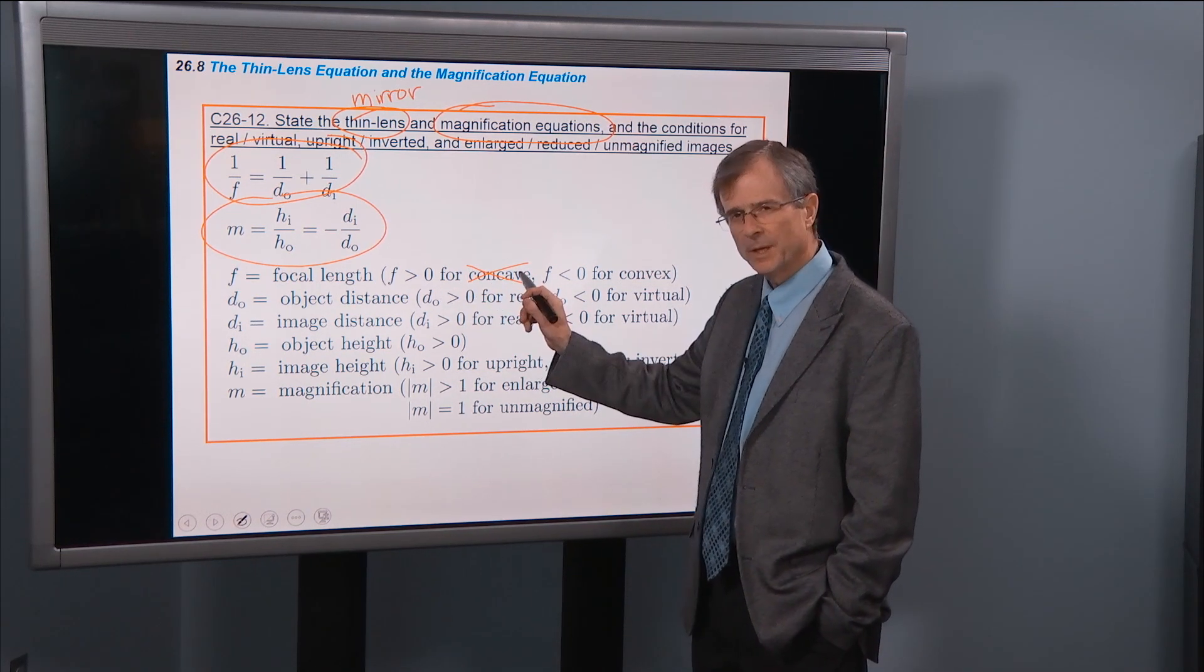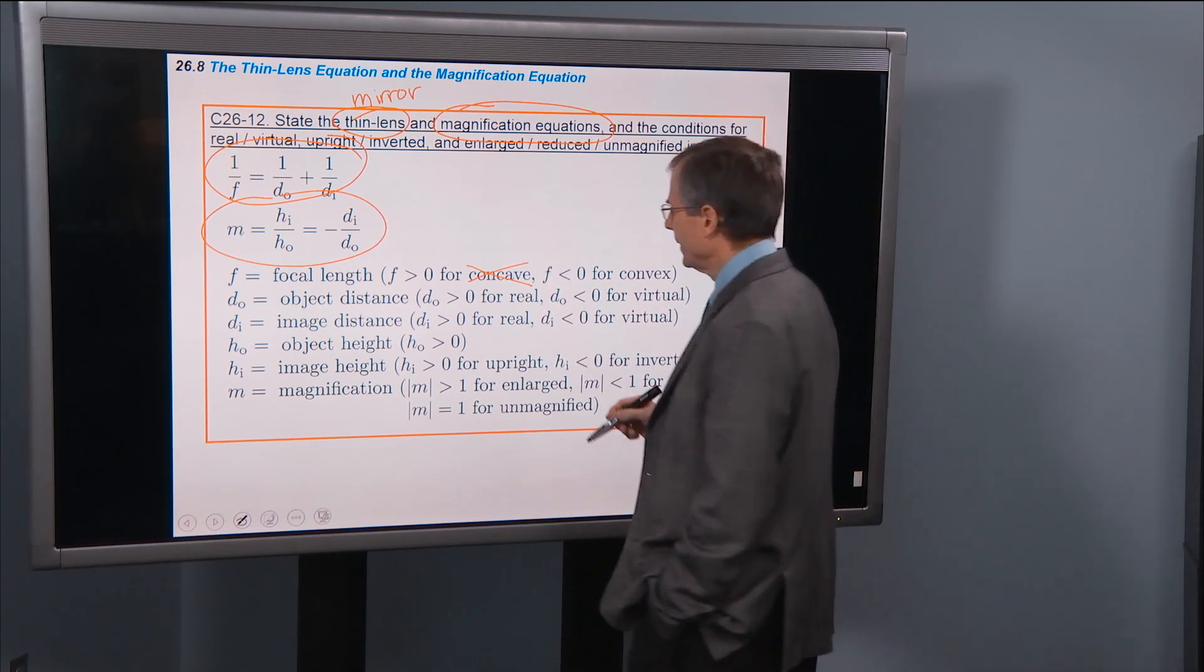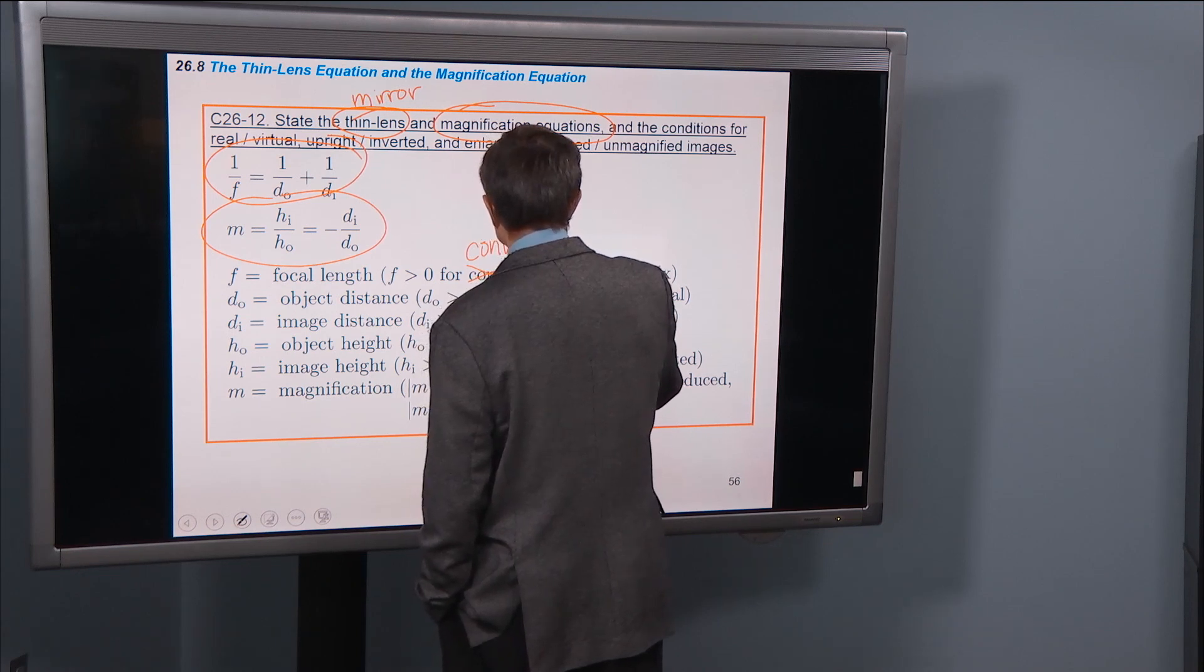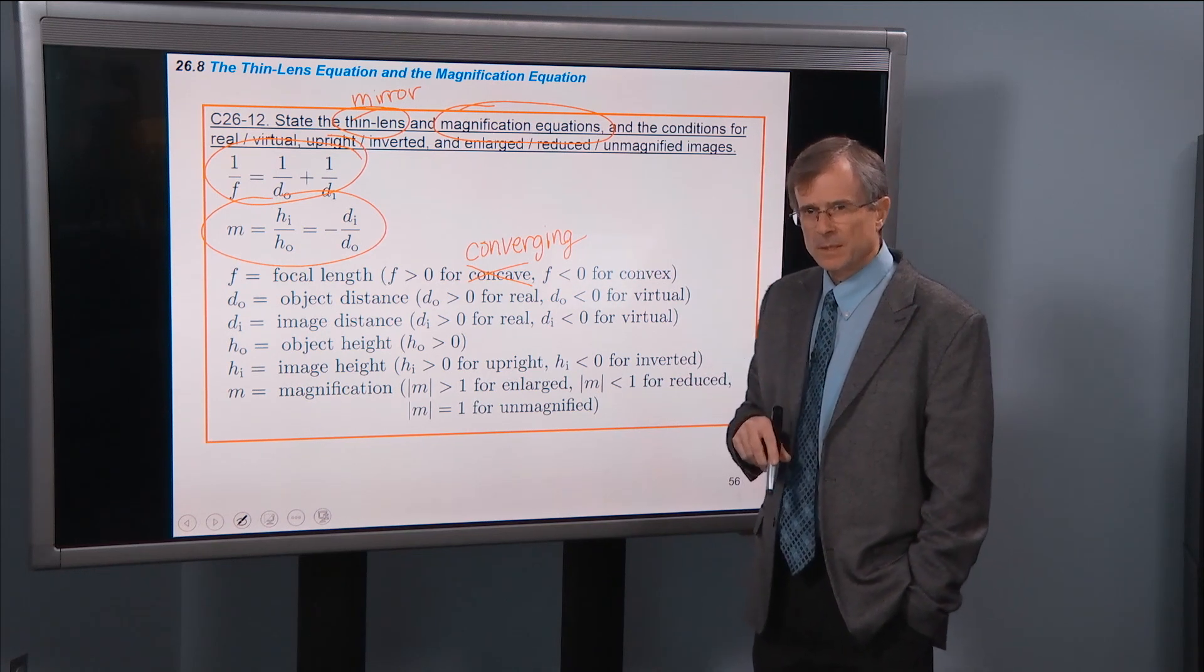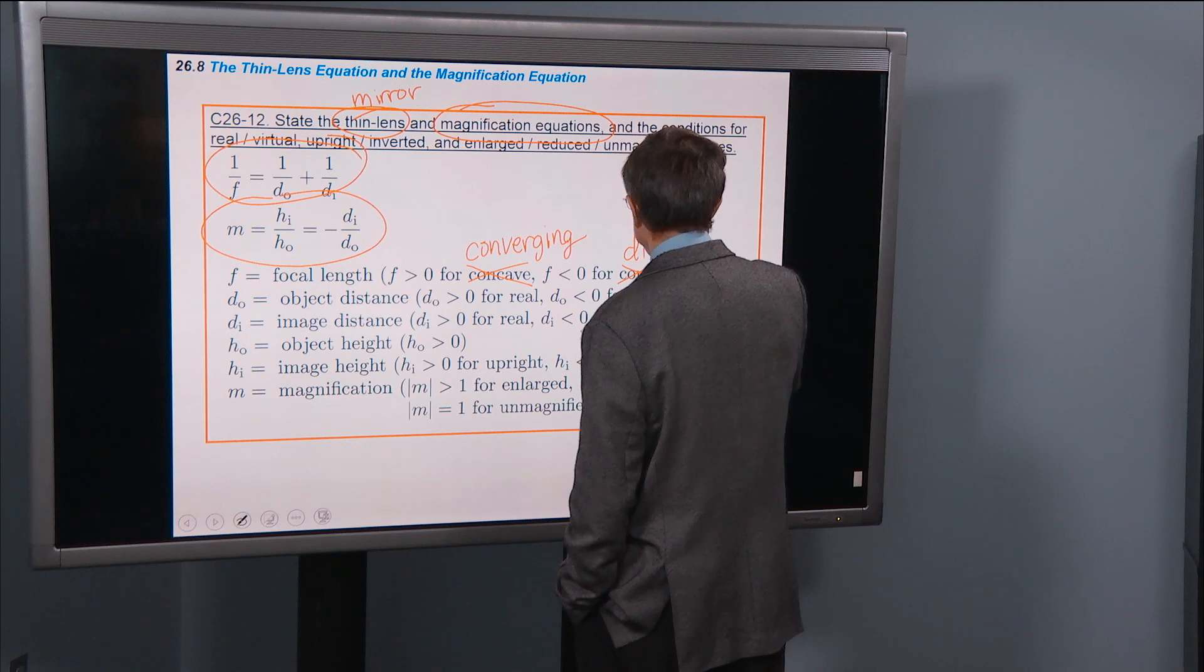It was greater than zero for a concave mirror. But now, this is for a converging lens. And F is less than zero for a diverging lens.